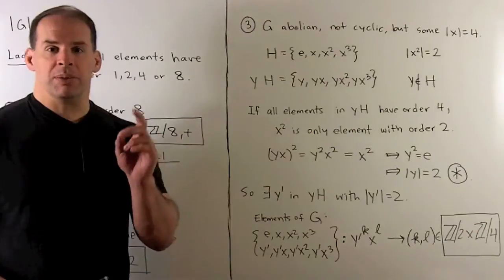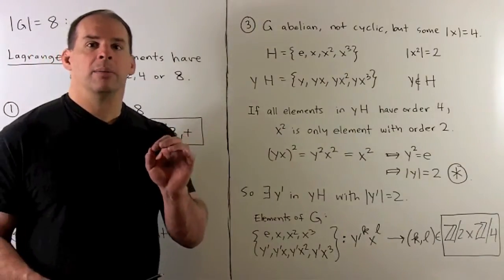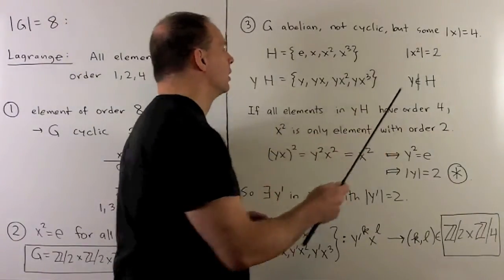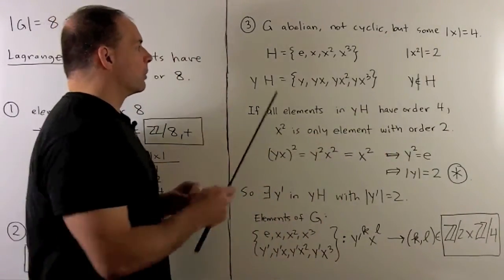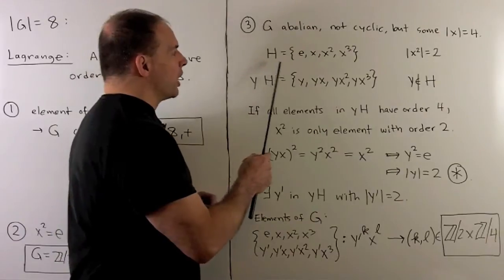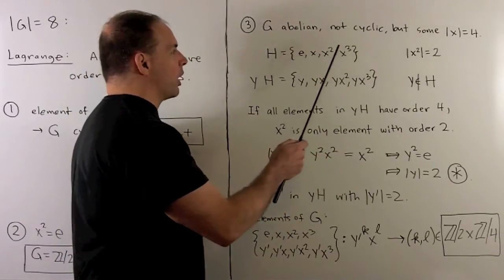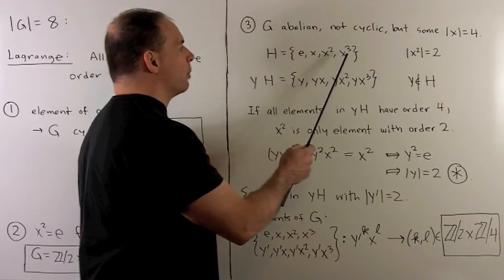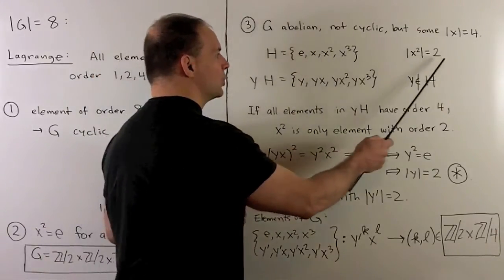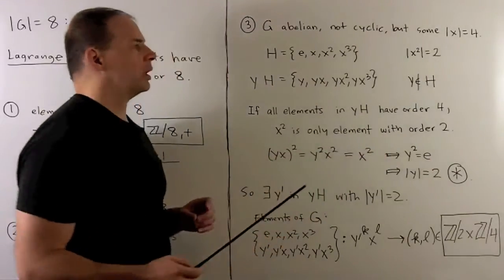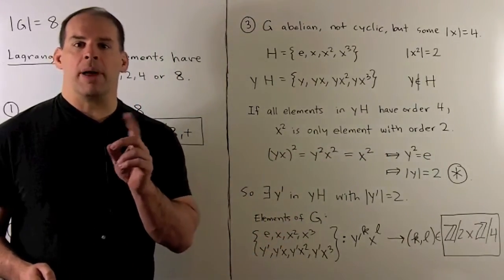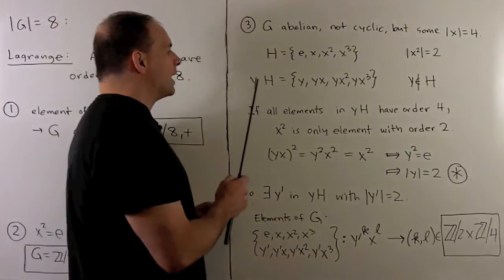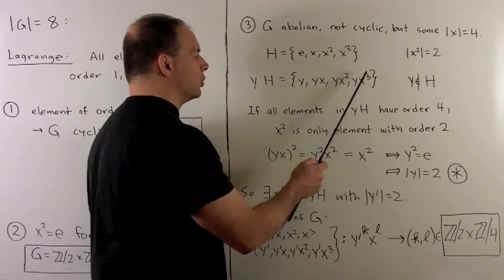Third case: G is abelian, not cyclic, but there's at least one element of order 4, so we'll call that x. We'll call the subgroup H, the subgroup generated by x: e, x, x squared, x cubed. X and x cubed are inverse to one another, so they both have order 4; x squared has order 2. There's going to be some element y not in H, and that gives us the other coset: y, yx, yx squared, yx cubed. This describes all elements in the group.